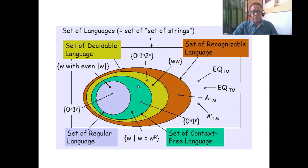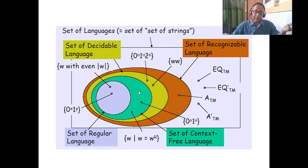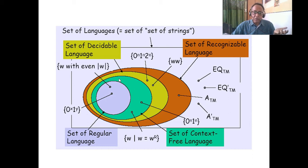This is the most interesting area — this is the context-free language. In fact, this area is huge. The nearest part is deterministic context-free language. The deterministic context-free — we know examples: A to the power N, B to the power N, balanced parenthesis. These are extremely good examples, and these languages are very useful for programming.